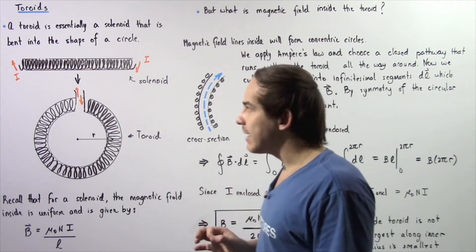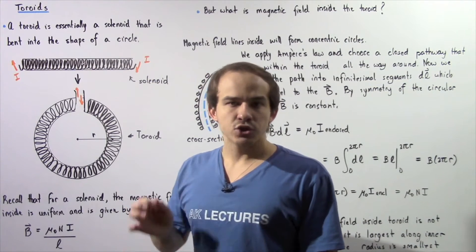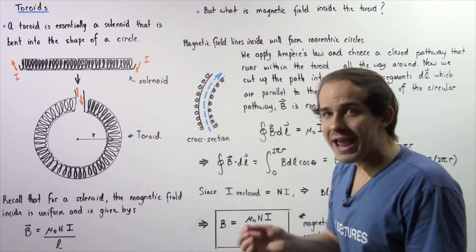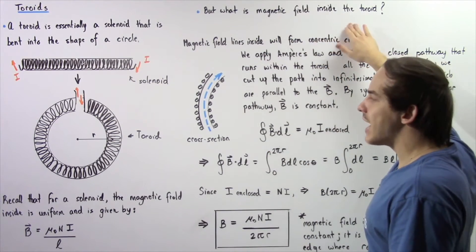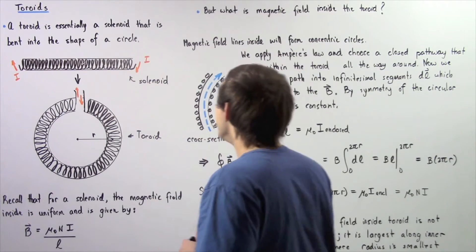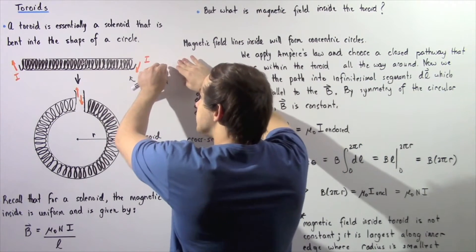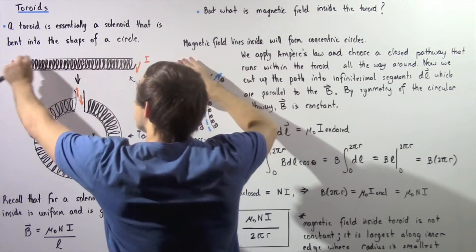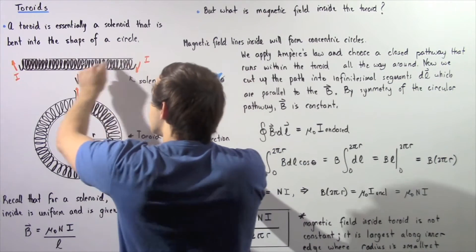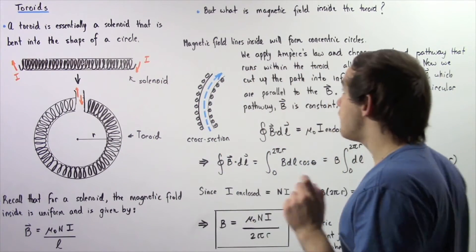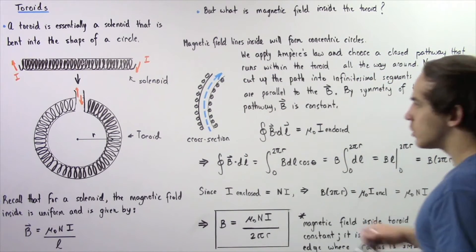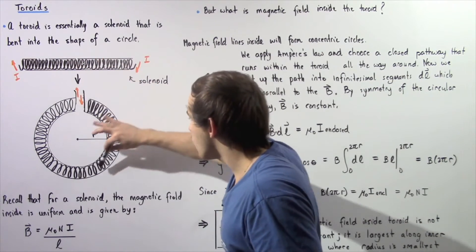Now we're going to examine the magnetic field inside our toroid — what is the equation that gives us the magnetic field inside a toroid? Recall that the magnetic field lines inside a solenoid are straight lines. But if we bend the solenoid to form the toroid, those magnetic field lines will also bend. In fact, the magnetic field lines inside a toroid will form concentric circles that go all the way around.